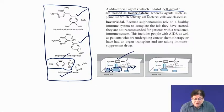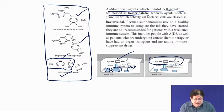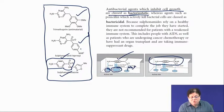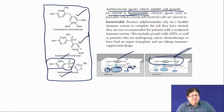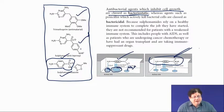The para-aminobenzoic sulfonamide has a very similar structure: the NH2 forms the hydrogen bond, the aromatic ring is present, and instead of CO2 minus you have SO2 minus, which forms the ionic bond. So this is a very good competitive inhibitor of para-aminobenzoic acid.